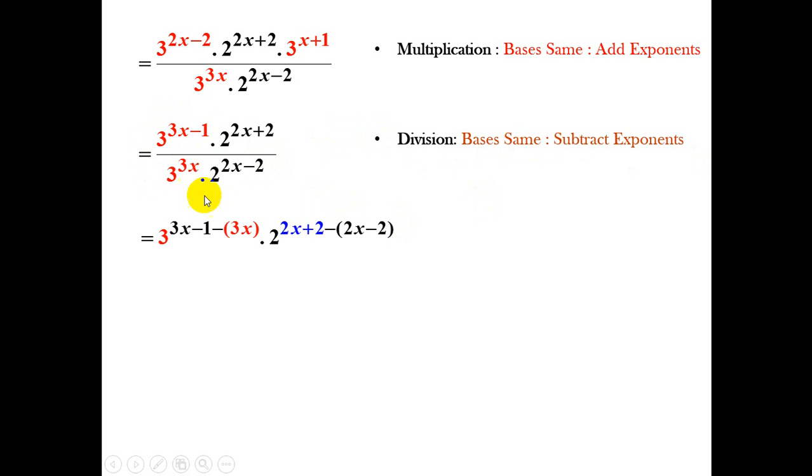So if we implement that, we are looking at 3x minus 1 minus 3x, which I have in the next step, and 2x plus 2, subtract 2x minus 2. Note, I've kept the bracket because a minus sign would change my signs in the brackets. Because subtraction means we must change signs.